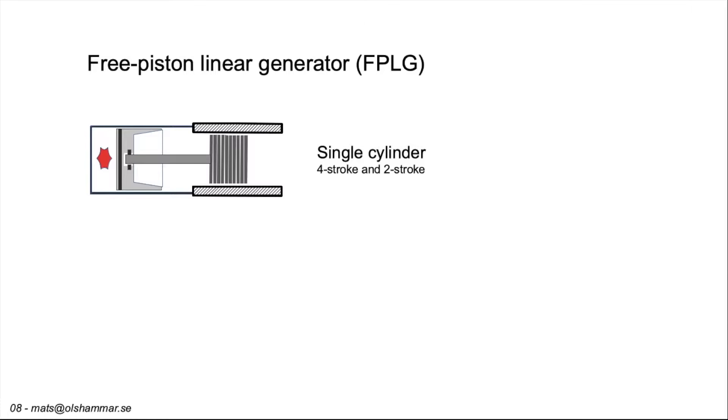A piston connected to a normal crankshaft has a fixed top dead center and a fixed bottom dead center but a free piston does not. Power electronics will control its top dead center and bottom dead center to give the correct compression and expansion ratio.